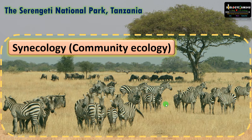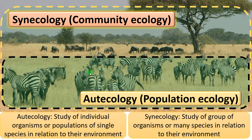If we are studying many populations belonging to different species — like the zebra population, the buffalo population, then cheetahs, lions, etc. — their interactions with each other and with their environment, then it is called synecology or community ecology. Otocology is defined as the study of individual organisms or populations of a single species in relation to their environment, and it is also called population ecology.